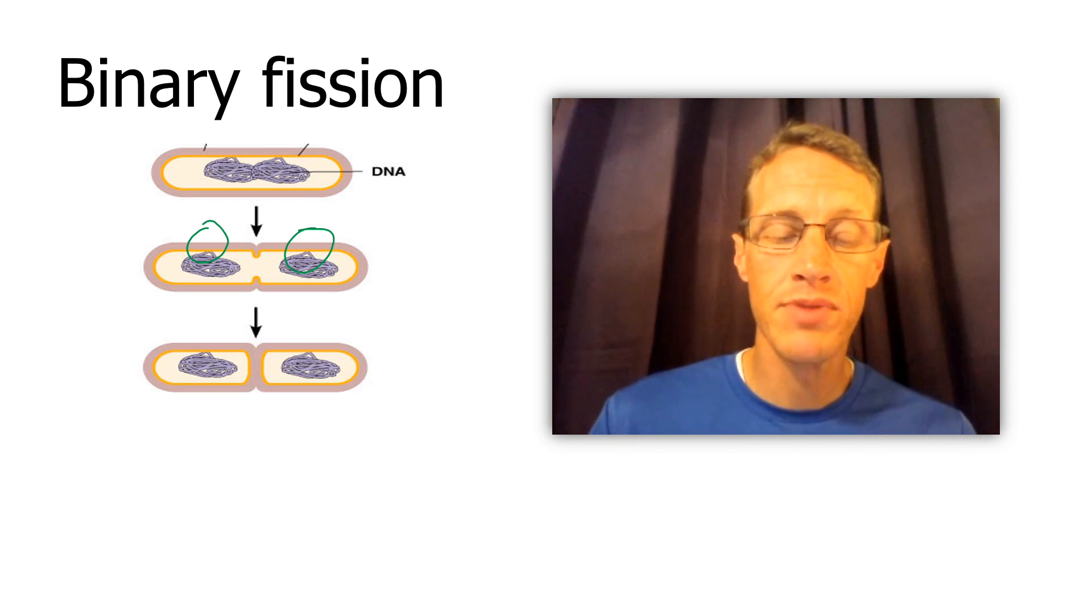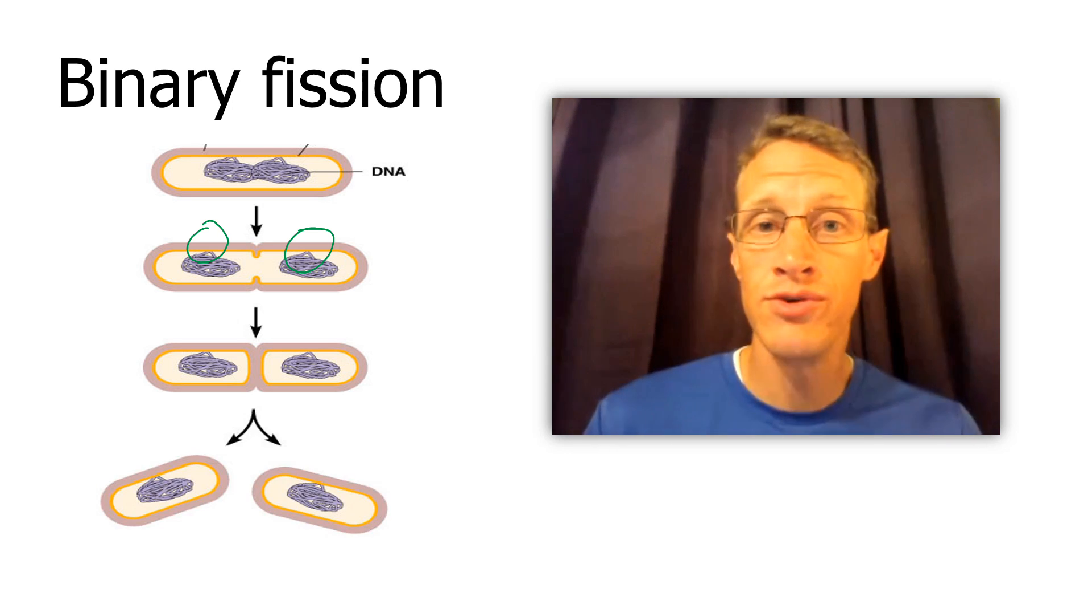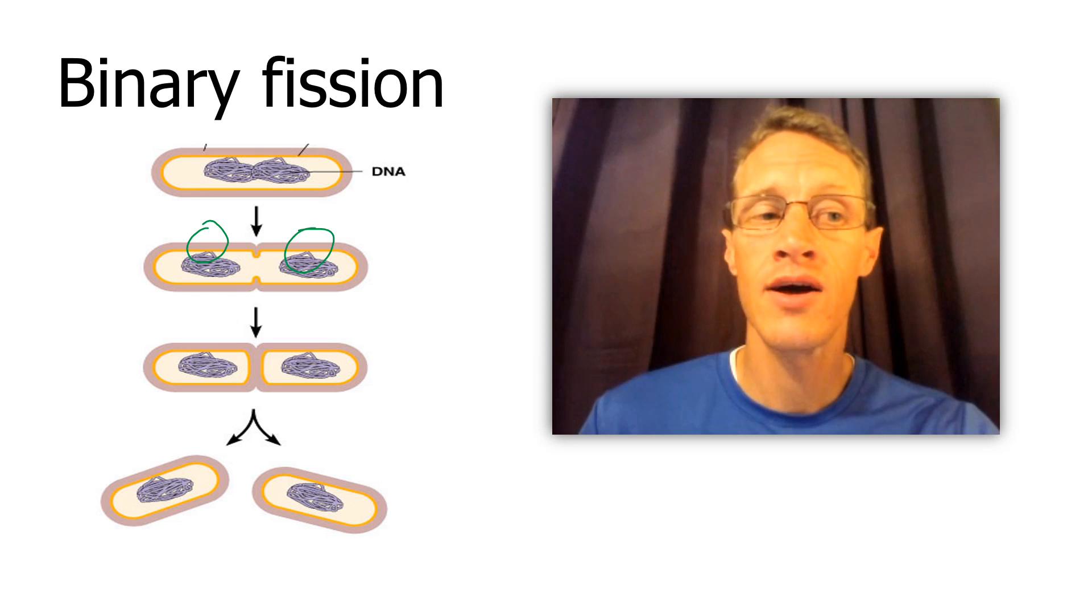It grows a cell wall as well, and you have now two identical clones of that original cell. One difference between prokaryotes and eukaryotes is that prokaryotes have circular DNA. It's a complete circle with no ends.